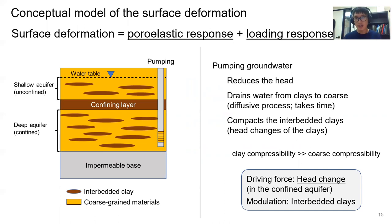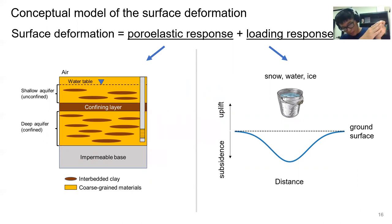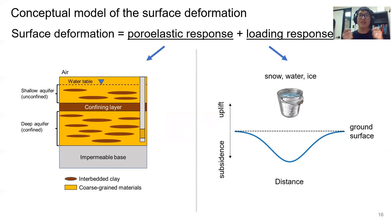What we are interested in is recovering this head change, which is the driving force of the system. To do so, we also need to estimate the properties of the interbedded clays because they modulate the surface deformation. The second response is the loading response. Any form of water added to the ground surface generates a loading response — adding mass causes subsidence, while removing mass generates uplift. So in a dry season, you expect uplift, and in a wet season, you expect subsidence.